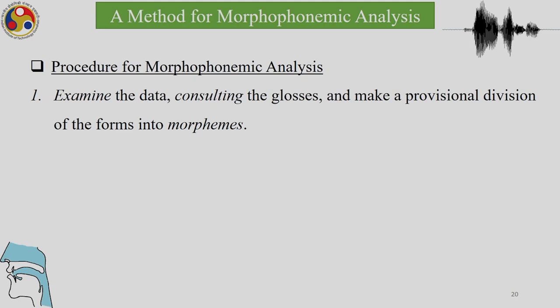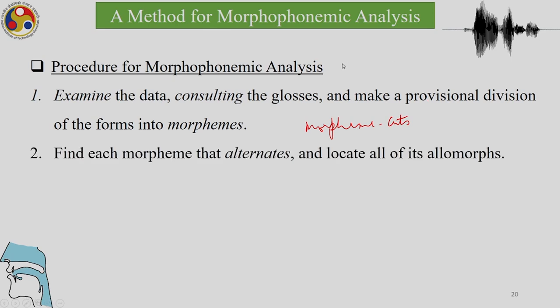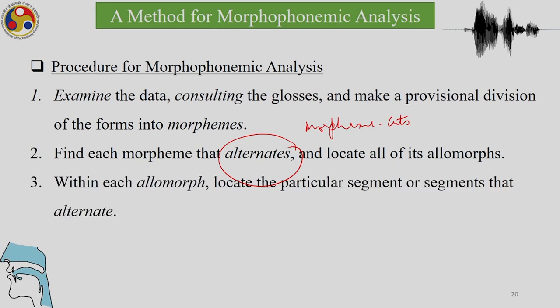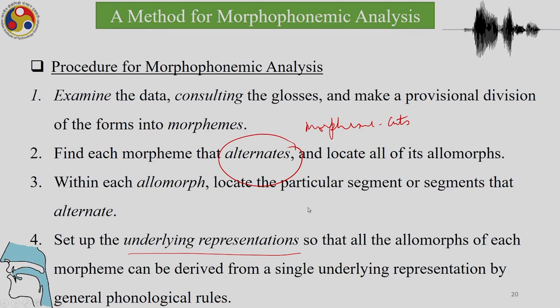What is the procedure for morphophonemic analysis? We have to examine the data, look at the glosses, and make provisional divisions of the forms into morphemes — what are known as morpheme cuts. We then find each morpheme that alternates and locate all of its allomorphs. Within each allomorph we locate the particular segment or segments that alternate, and find the regularity of a process. Then we set up the underlying representations so that all the allomorphs of each morpheme can be derived from a single underlying representation.